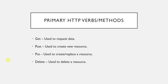The next verb is PUT, which is used to create or replace a resource. Most commonly we use PUT to update a resource. It works like this: if the resource is present it will modify it, and if the resource is not present a new resource will be created. The last one is DELETE, which is used to delete an available resource — it must be present on the server to be deleted. In the upcoming video we are going to see all these verbs in action with a practical example.